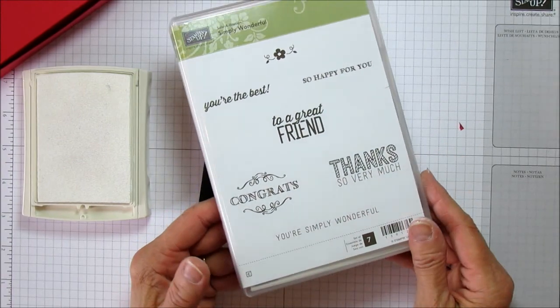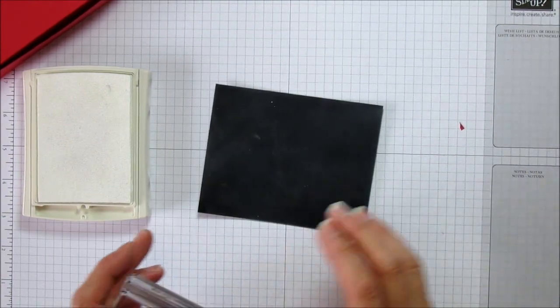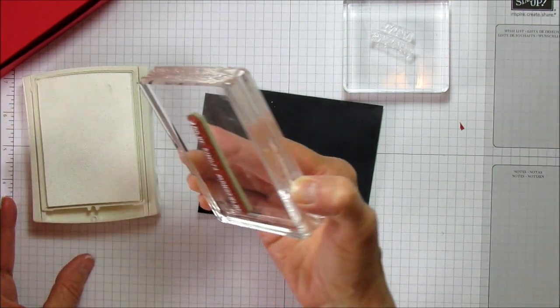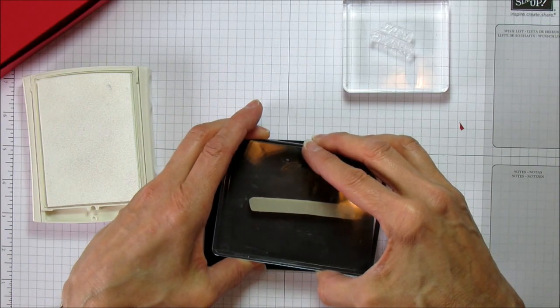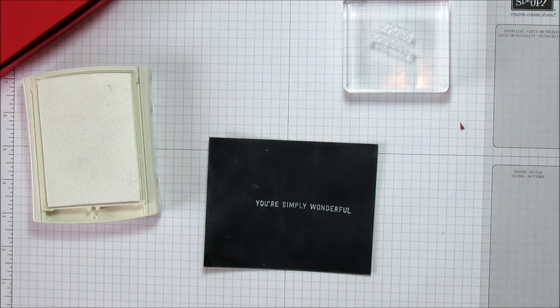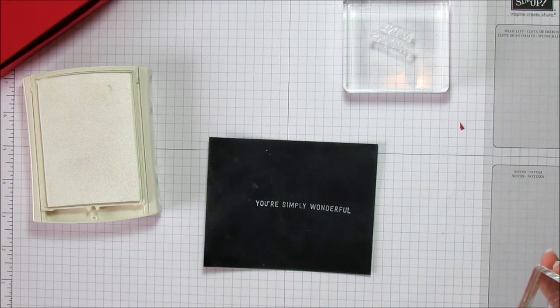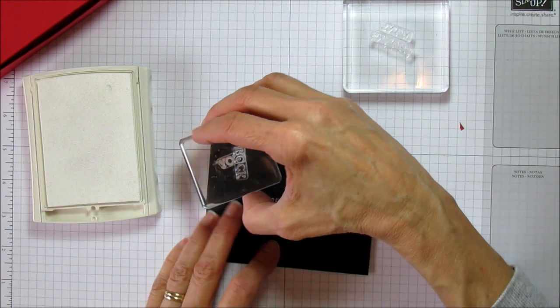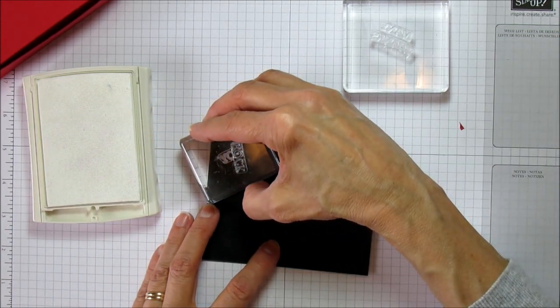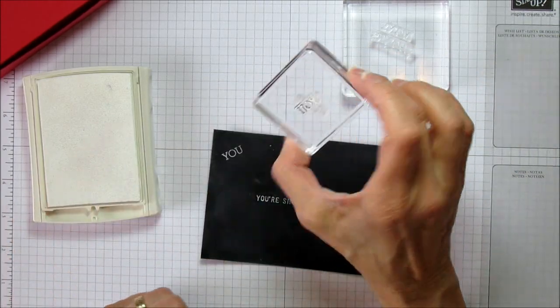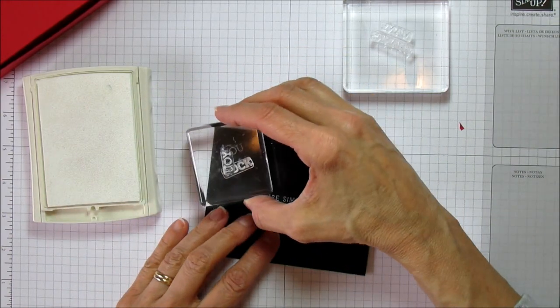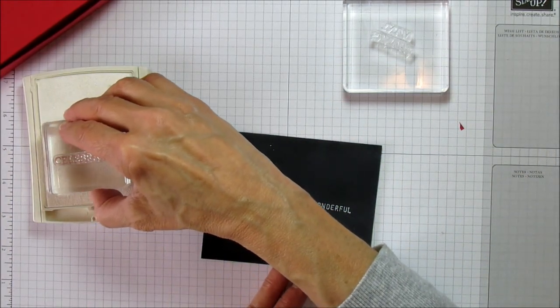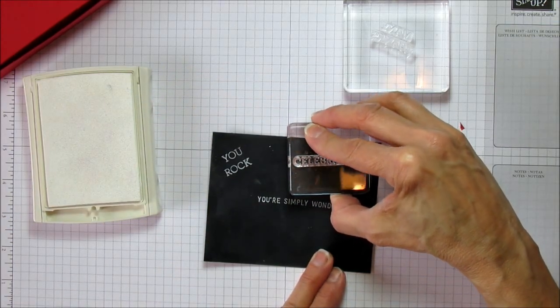I'm using 'you're simply wonderful' from the Celebration set. I'm going to stamp that first because that's in the center. Then I'm going to do 'you rock.' I put the 'you' on one side and then the 'rock' on the other so I can use the 'you' again for 'celebrating you.'